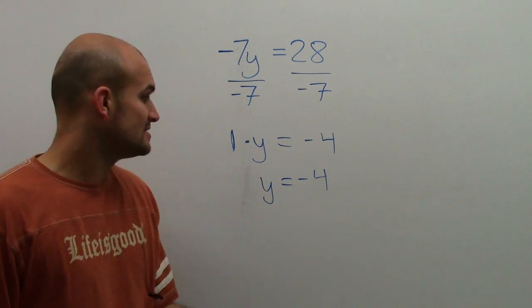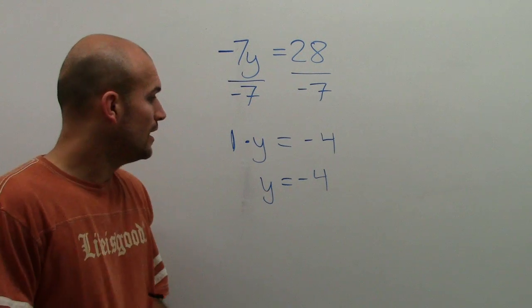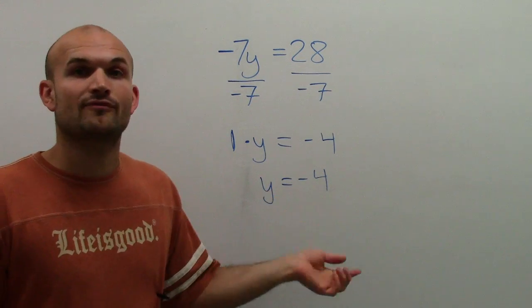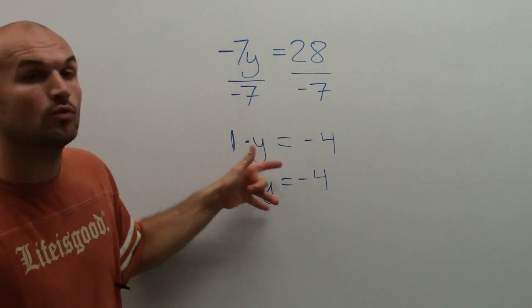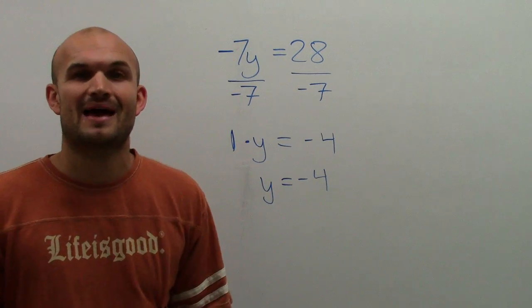And there, you can see that I now have my value of y, which is equal to -4, which you might have been able to do in your head. But you can see that these are equivalent equations with the same value. Thanks.